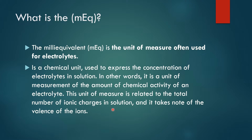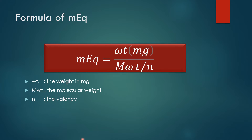This unit measures the total number of ionic charges in solution, so we depend on the valency and it takes note of the valence of the ions. The formula states that milliequivalence equals the weight in milligrams over the molecular weight of the electrolyte divided by the valency. So: MEq = weight (mg) / (molecular weight / n).